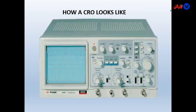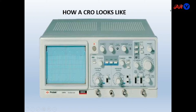Firstly, how does a CRO look? The picture of the CRO is shown in the figure. It is a two channel CRO — channel 1 and channel 2 — meaning two channels can be displayed simultaneously on the screen. It has different knobs: a time base generator which is a time per division scale, and two scales for voltage per division for the first channel and voltage per division for the second channel.